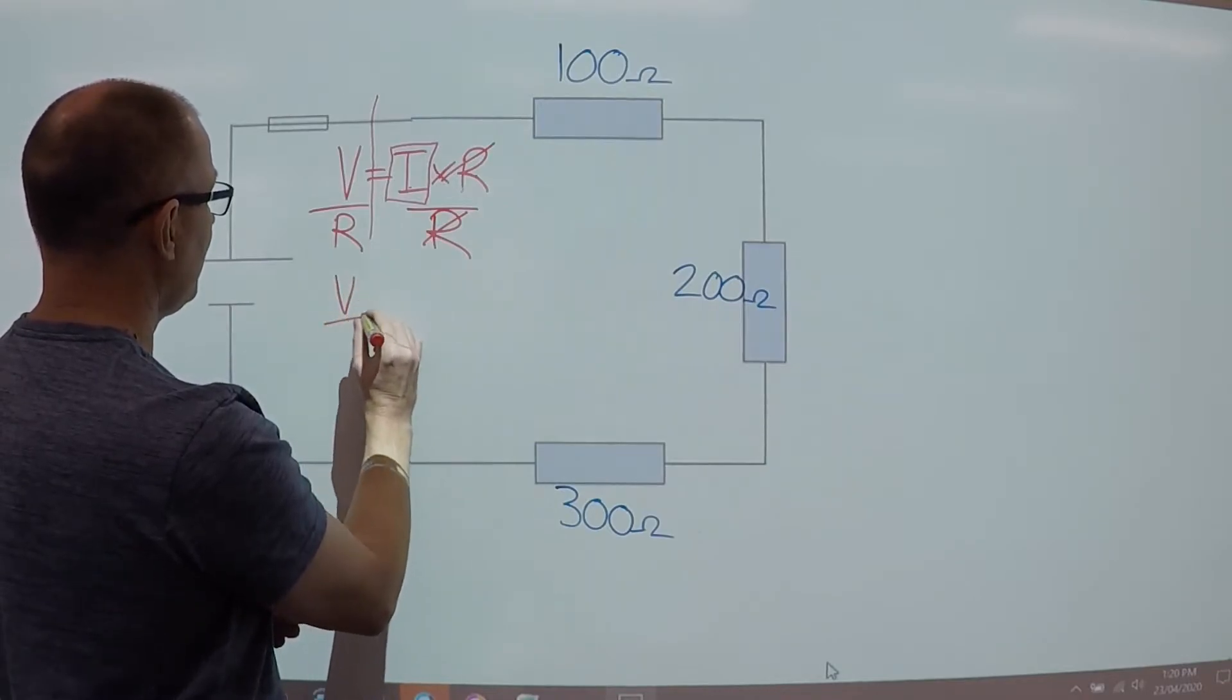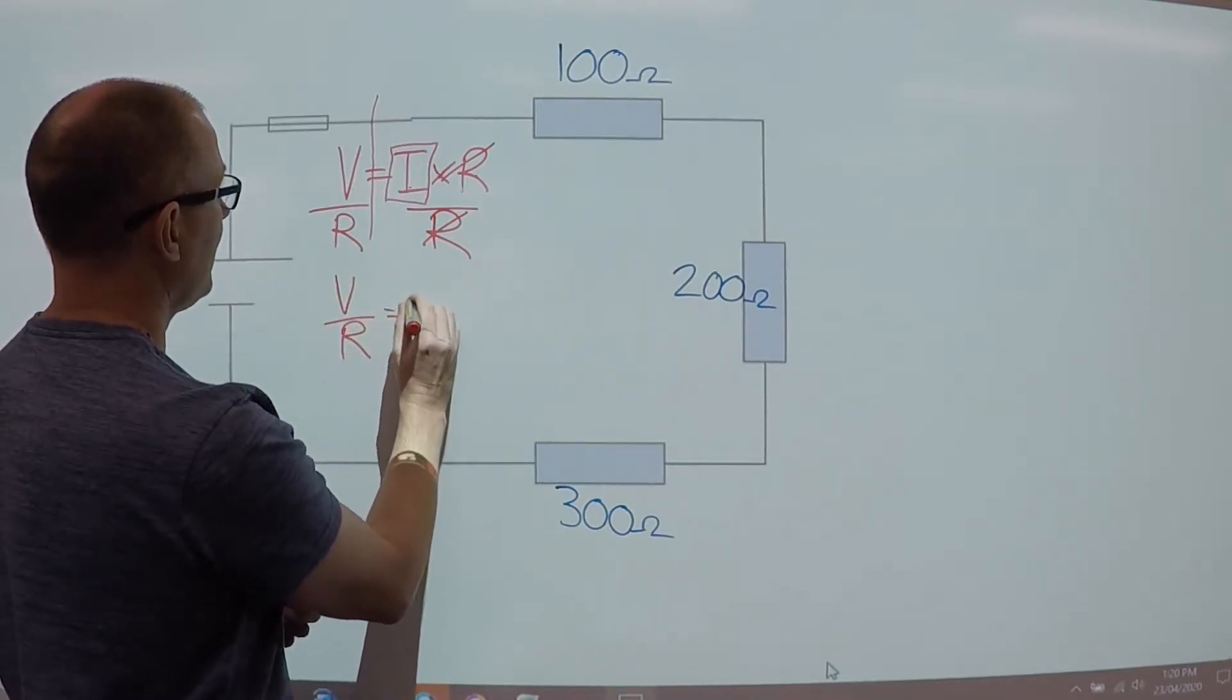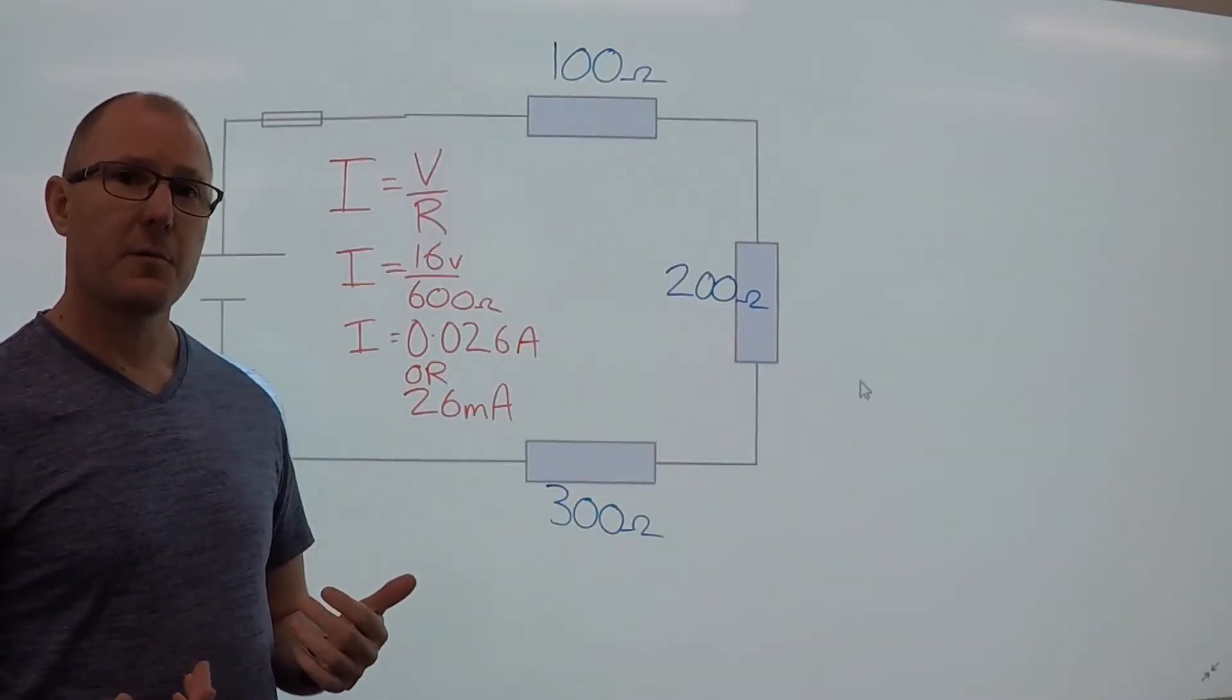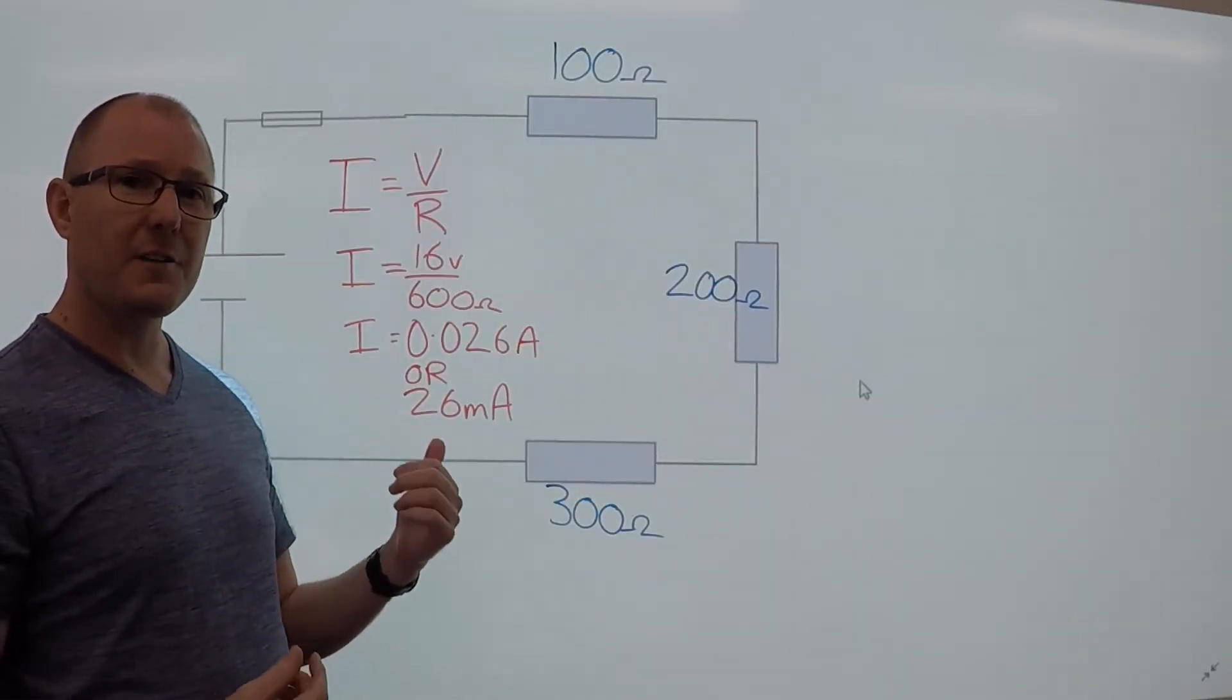So V over R equals I. Now that we know how to transpose the formula, we can look at the actual calculations.